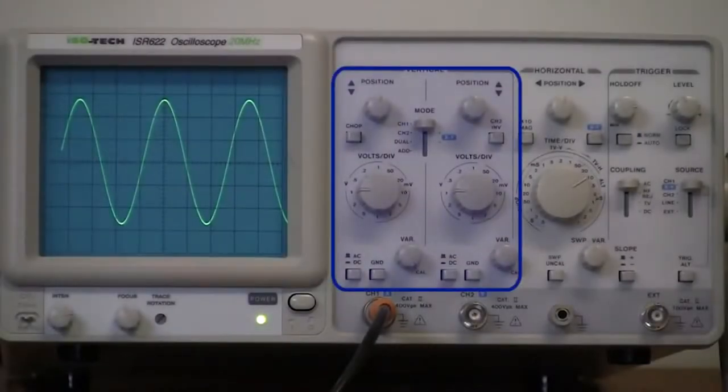The set of controls on the left of the oscilloscope vary the position and scaling of the vertical, or voltage axis, of the signal displayed on the oscilloscope screen.